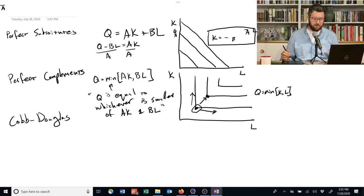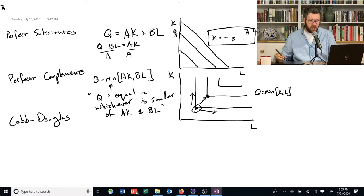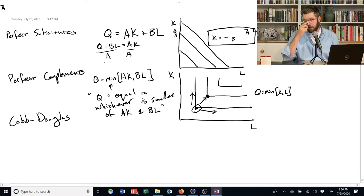In this case, the marginal rate of technical substitution is sort of like either zero or infinite. These guys can't be replaced at all, or you need an infinite amount of extra laborers to replace one unit of robot. In contrast, up here with the perfect substitutes, the marginal rate of technical substitution was constant. They could always substitute between the two.